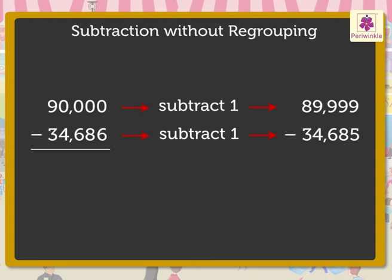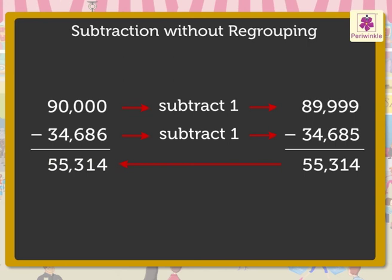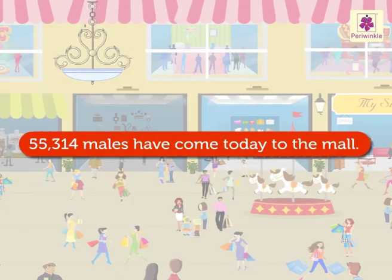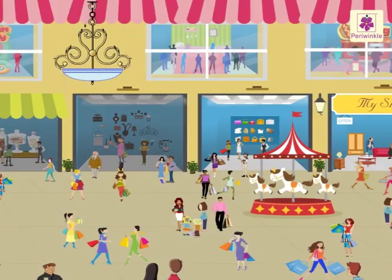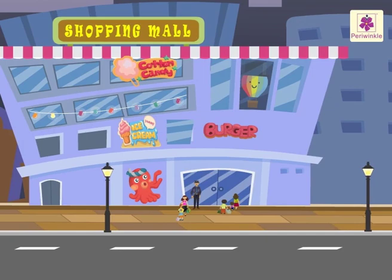Now, subtract these numbers to get the answer. Thus, the difference of ninety thousand and thirty-four thousand six hundred eighty-six is fifty-five thousand three hundred fourteen. Isn't this an easy way to subtract? Thus, fifty-five thousand three hundred fourteen males have come today. They all are enjoying. Wow! It was so much fun learning here.